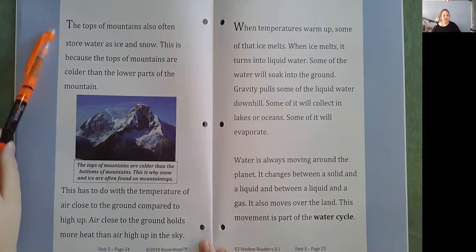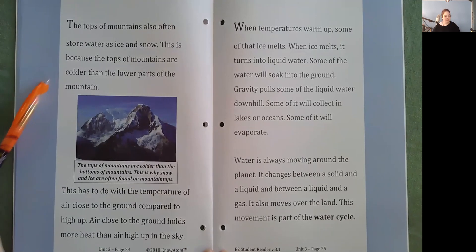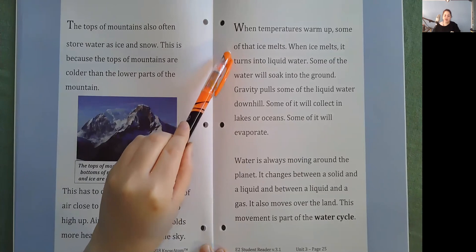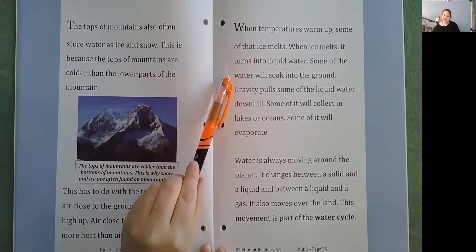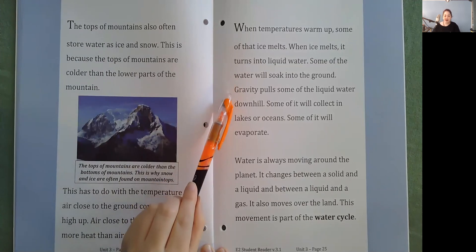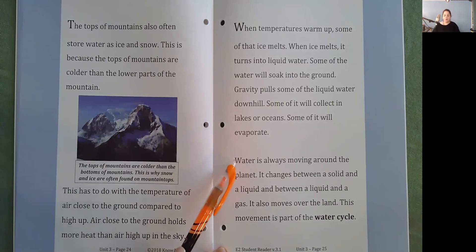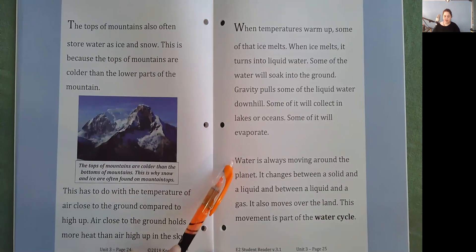The tops of mountains also often store water as ice and snow. This is because the tops of mountains are colder than the lower parts of the mountain. This has to do with the temperature of air close to the ground compared to high up. Air close to the ground holds more heat than air high up in the air. The tops of mountains are colder than the bottoms of mountains. This is why snow and ice are often found on mountain tops. When temperatures warm up, some of that ice melts. When ice melts, it turns into liquid water. Some of the water will soak into the ground. Gravity pulls some of the liquid water downhill. Some of it will collect in lakes or oceans. Some of it will evaporate. Water is always moving around the planet. It changes between a solid and a liquid and between a liquid and a gas. It also moves over the land.